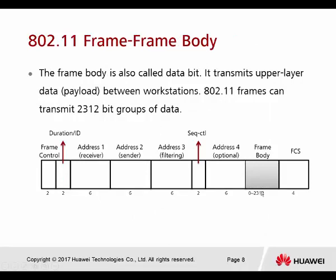The frame body is our data — this is the data bits. It transmits upper layer data between workstations, our STAs. 802.11 frames can transmit up to 2312 bytes of data. This is the maximum size. Because 802.11 is half duplex, every STA must wait in queue for data transmission.